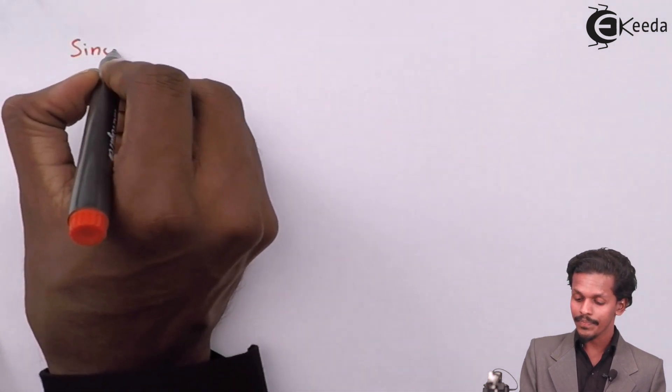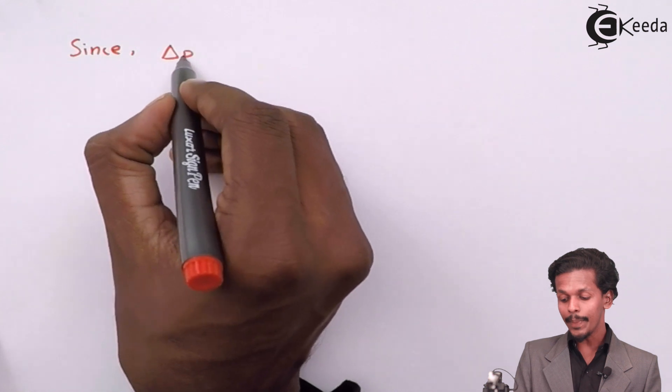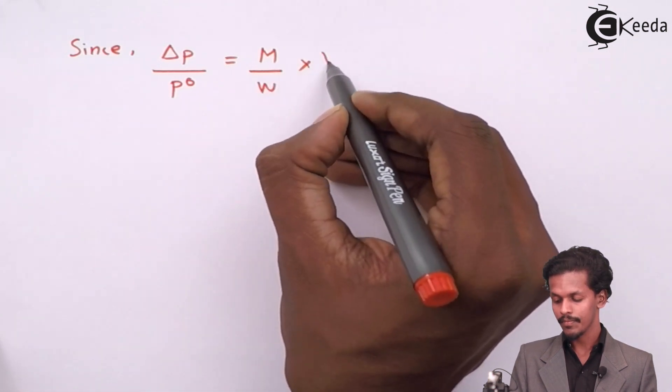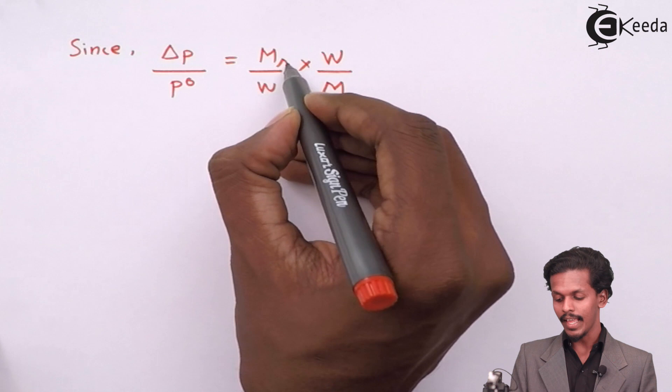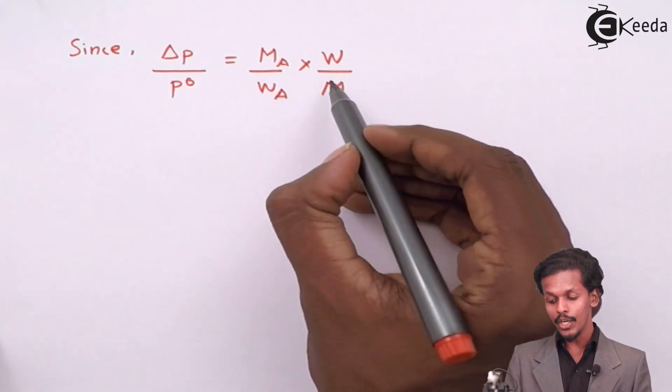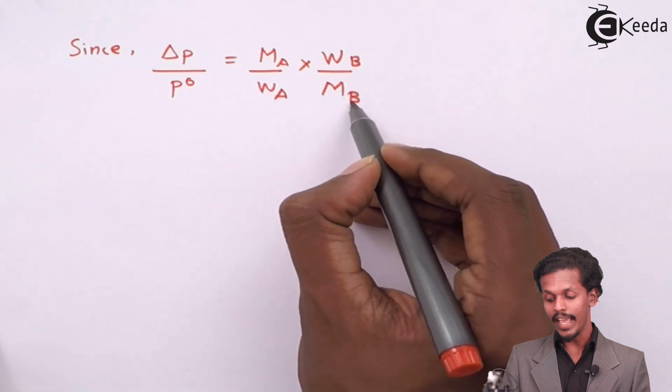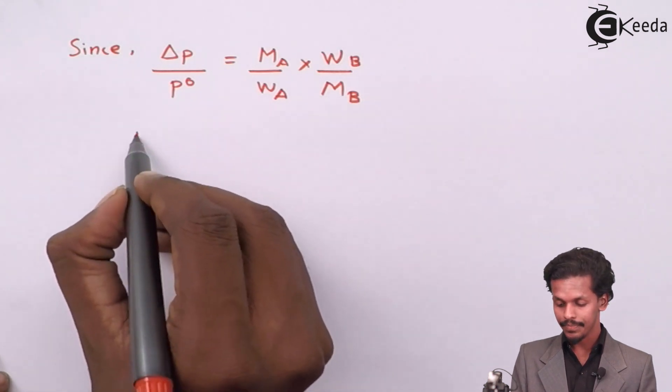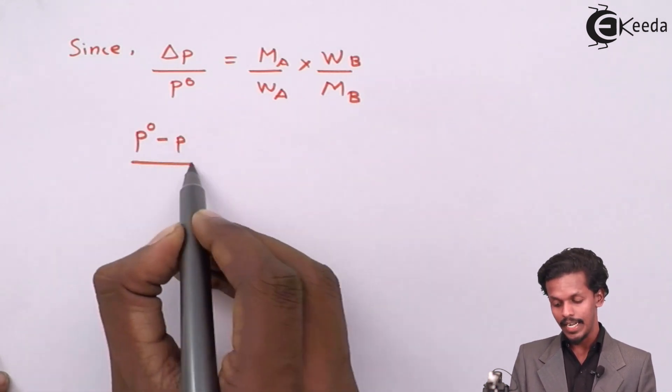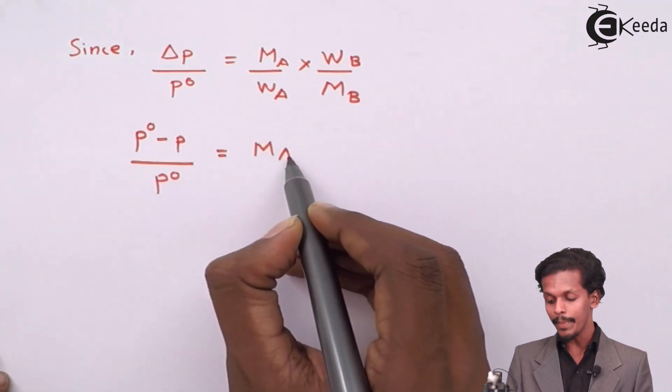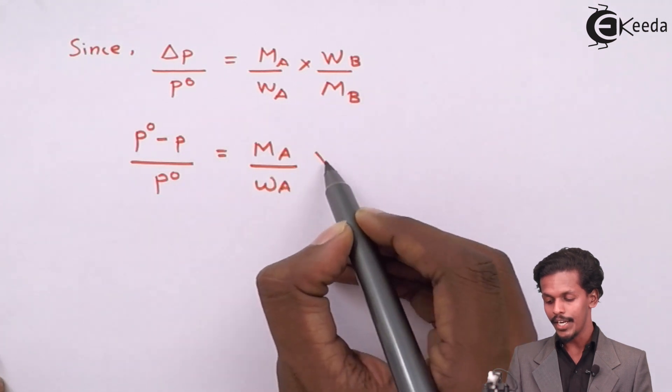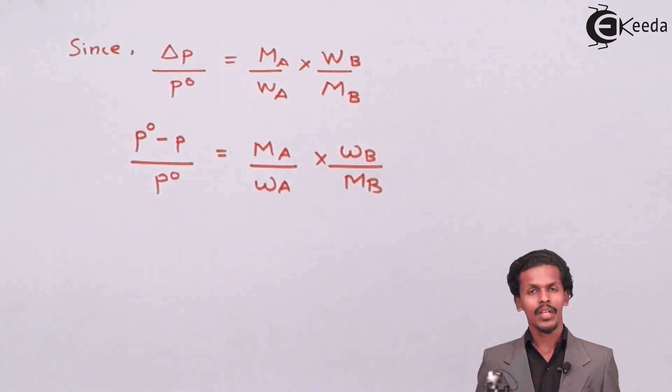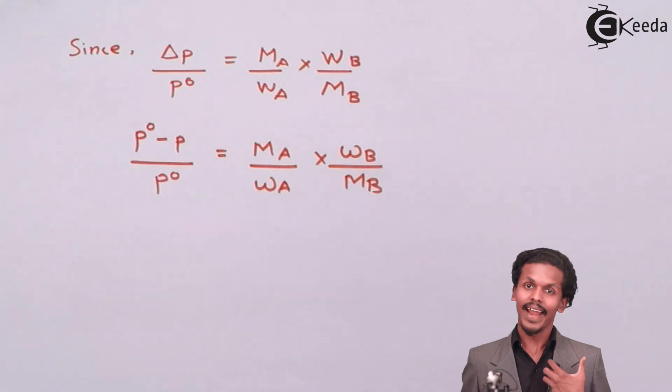Since we know the formula that is ΔP divided by P0 is nothing but MA divided by WA into WB divided by MB. So now in this case the ΔP can be described as P0 minus P divided by P0 which equals MA divided by WA into WB divided by MB. So let us substitute the values in it and let us determine.